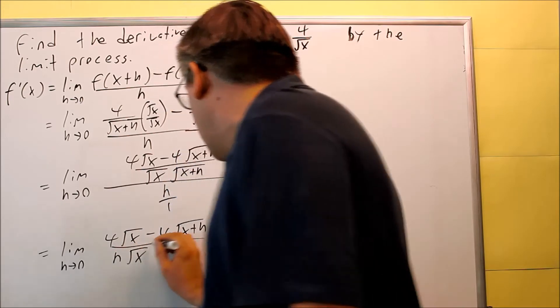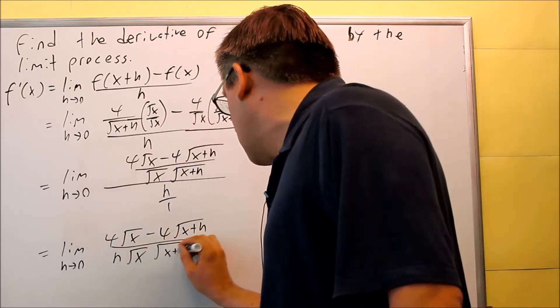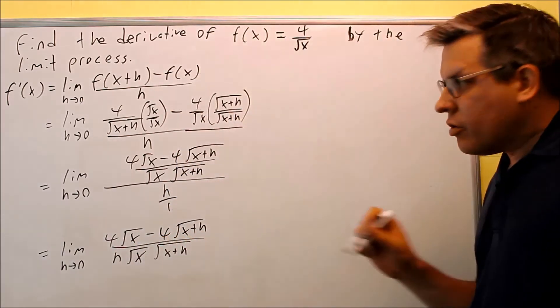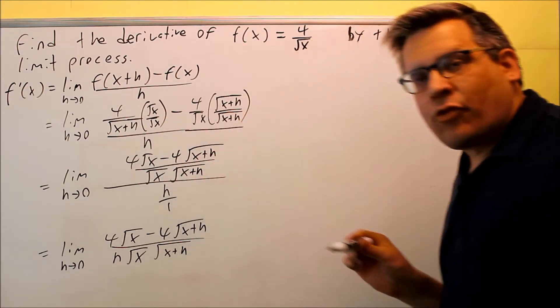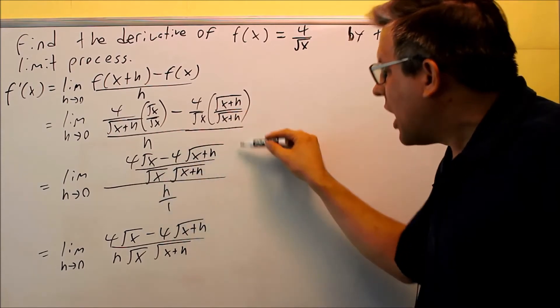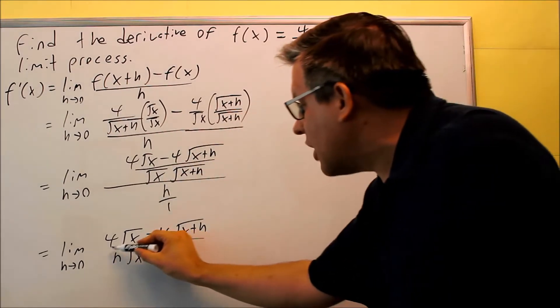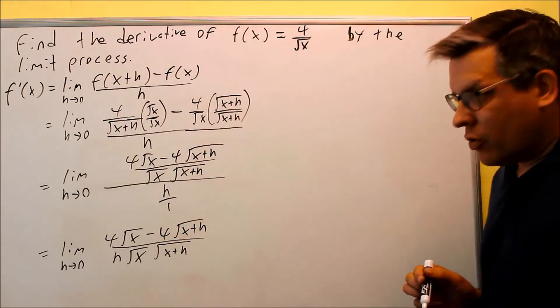So here's what it'll look like once I do that step. Then it's going to look like you'll have this. So again, what did I do? I took the top fraction, I multiplied it by the reciprocal of the bottom fraction. So you're taking all this times 1 over h, that's how the h ended up down below there.